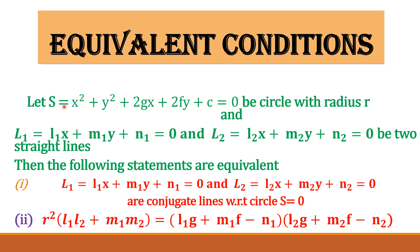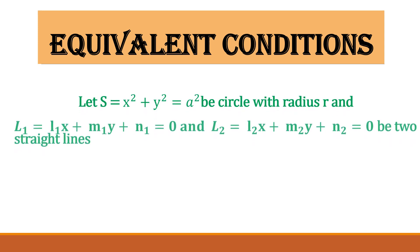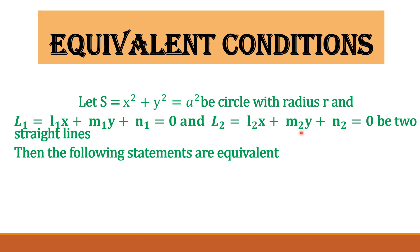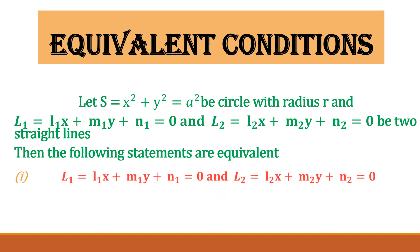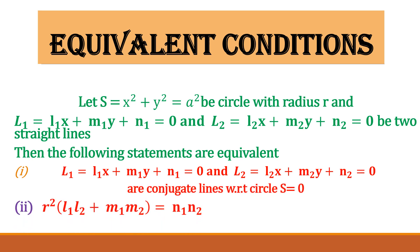Suppose we take the circle with center at the origin and radius a. Here also, the lines l₁=0 and l₂=0 are l₁x+m₁y+n₁=0 and l₂x+m₂y+n₂=0. These two lines are conjugate lines, and the second equivalent condition simplifies to: r²(l₁l₂+m₁m₂) = n₁·n₂. So these are the two equivalent conditions for conjugate lines — the first for a general circle not passing through the origin, and the second when the center is at the origin.